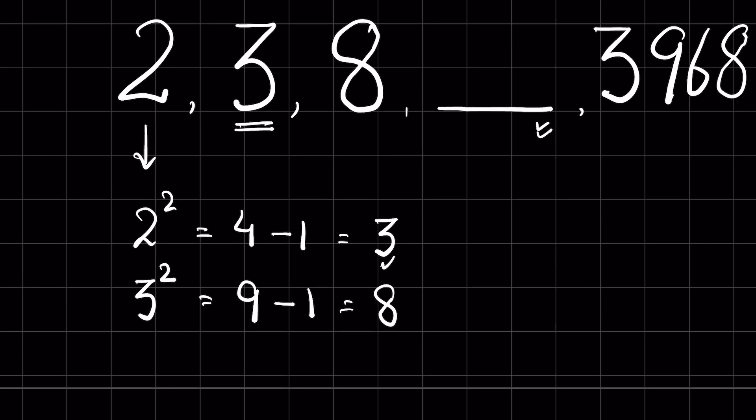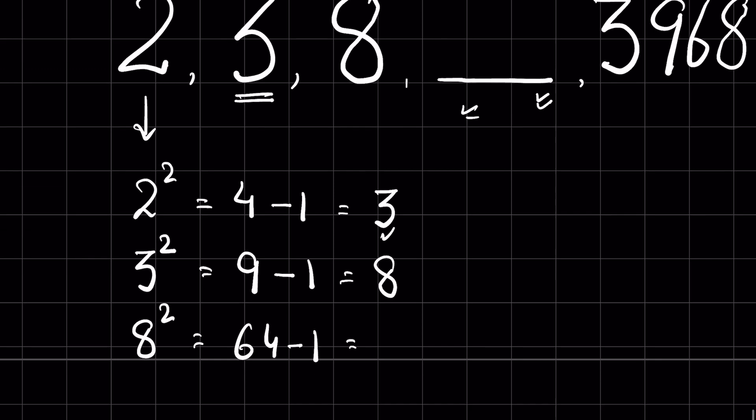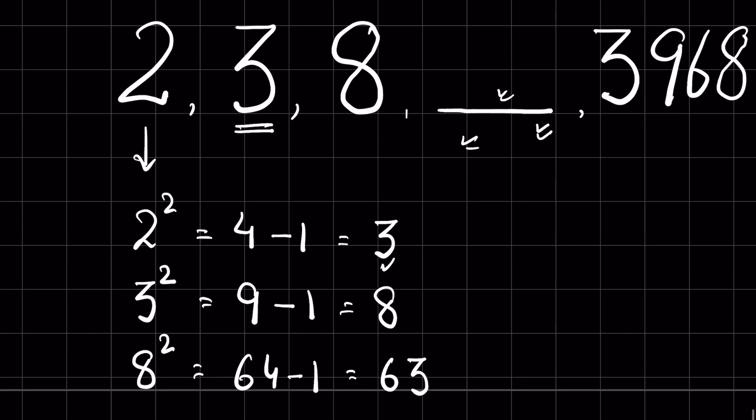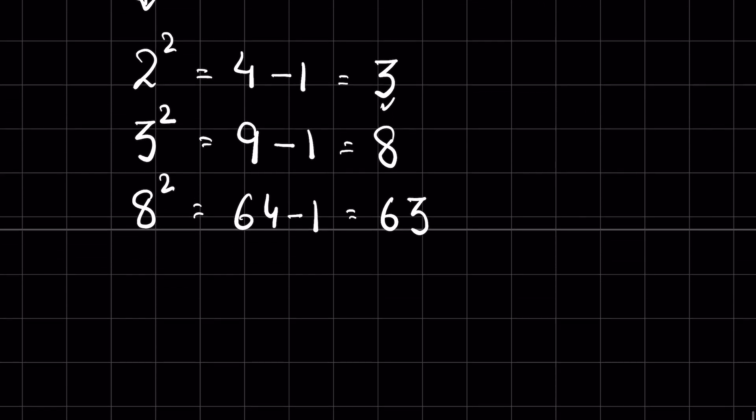So as per this pattern, this number should be 8 squared, that is 64, then minus 1, that equals 63. So this number should be 63. After 63, we have 3968. Let's check whether our answer is correct.